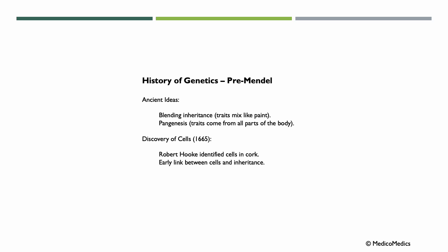Before modern science, people thought that traits blended together, like mixing colors. The blending inheritance theory couldn't explain trait reappearance. Pangenesis was the idea that small particles from the body would transfer traits to offspring, implying that acquired traits could be inherited — but this was later disproven.